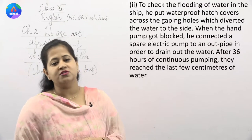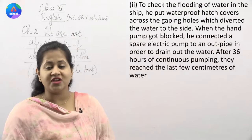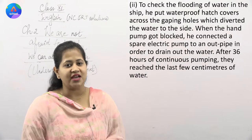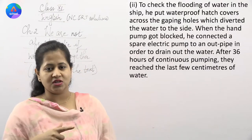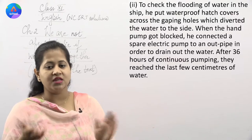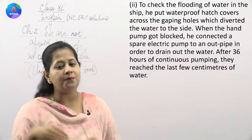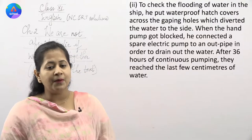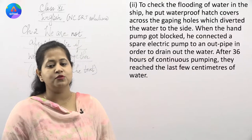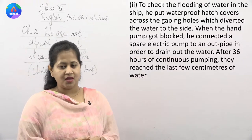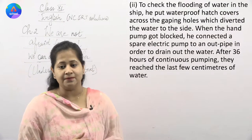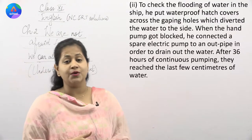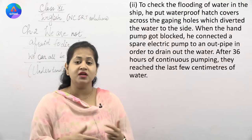To check the flooding of water in the ship, he put waterproof hatch covers across the gaping holes, which diverted the water to the side. He covered the holes with the hatch cover so no water could enter and the water direction went the other side. When the hand pump got blocked, he connected a spare electric pump to an outpipe in order to drain out the water. After 36 hours of continuous pumping, they reached the last few centimeters of water — continuously pumping in rotation for two days.